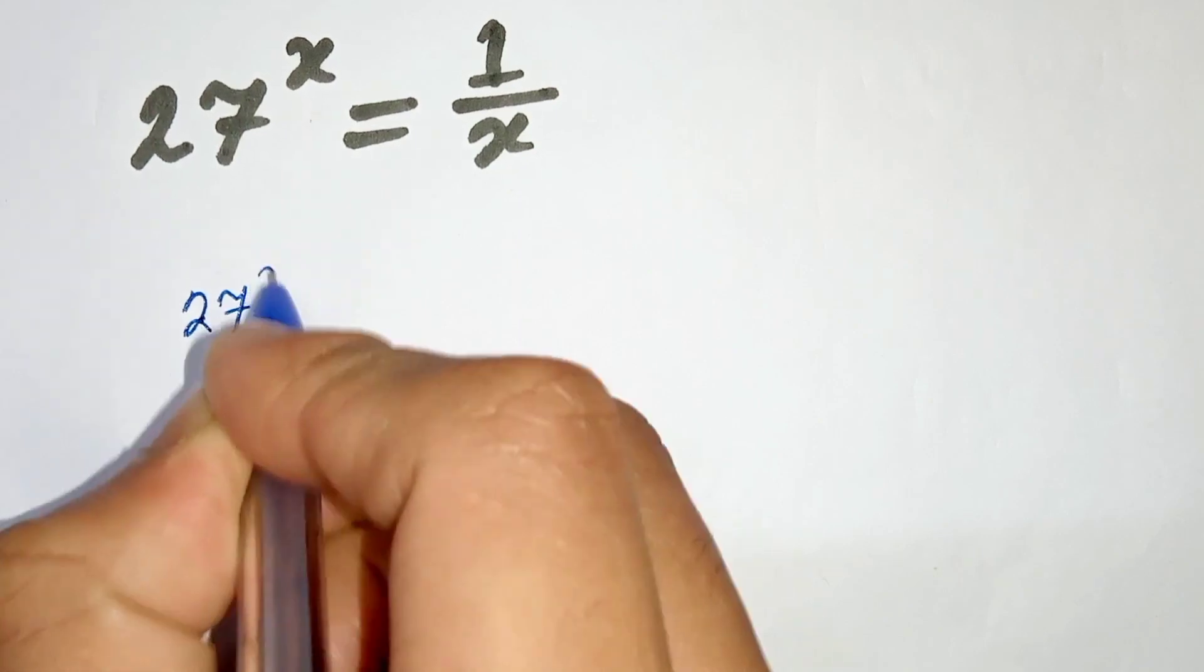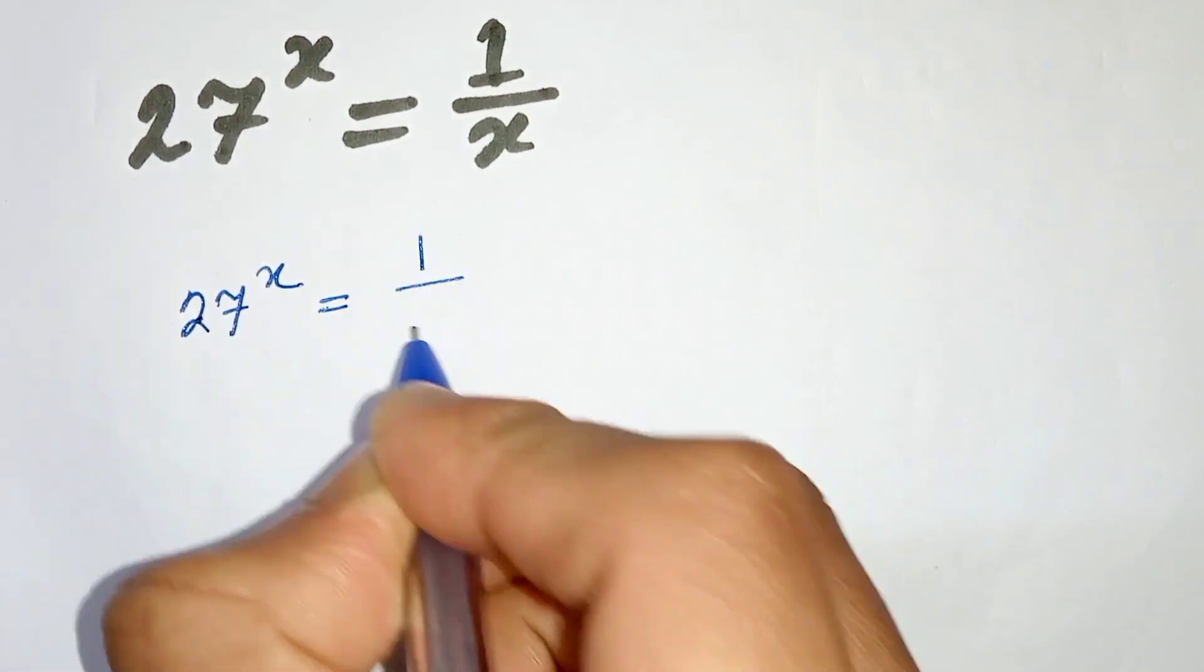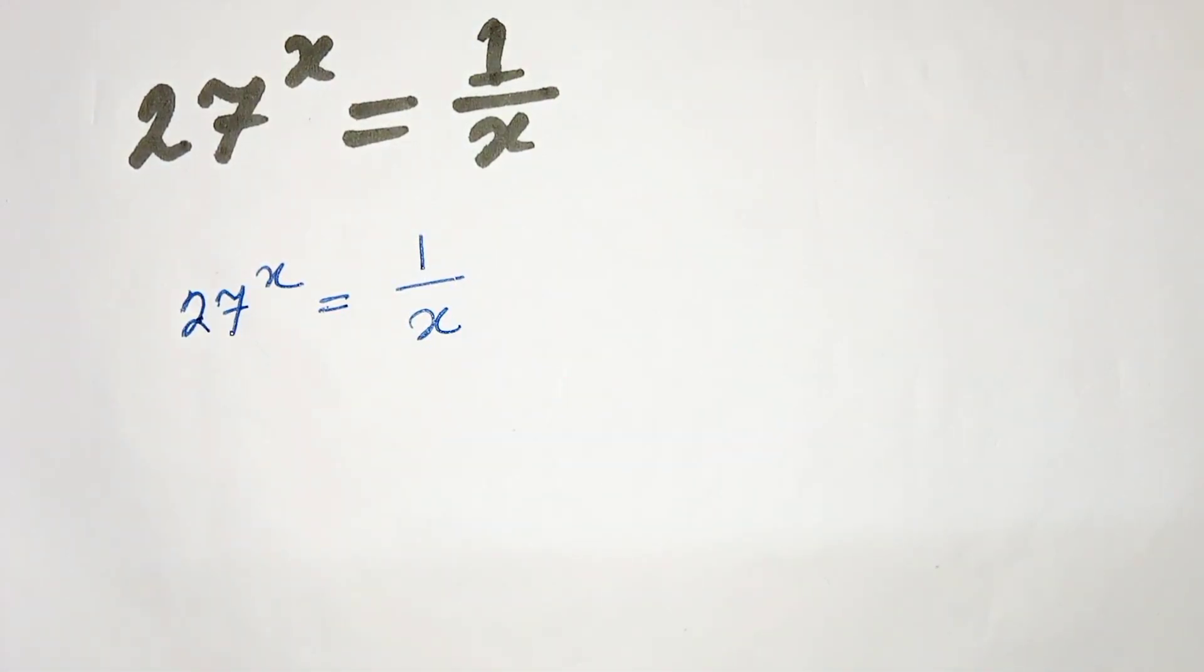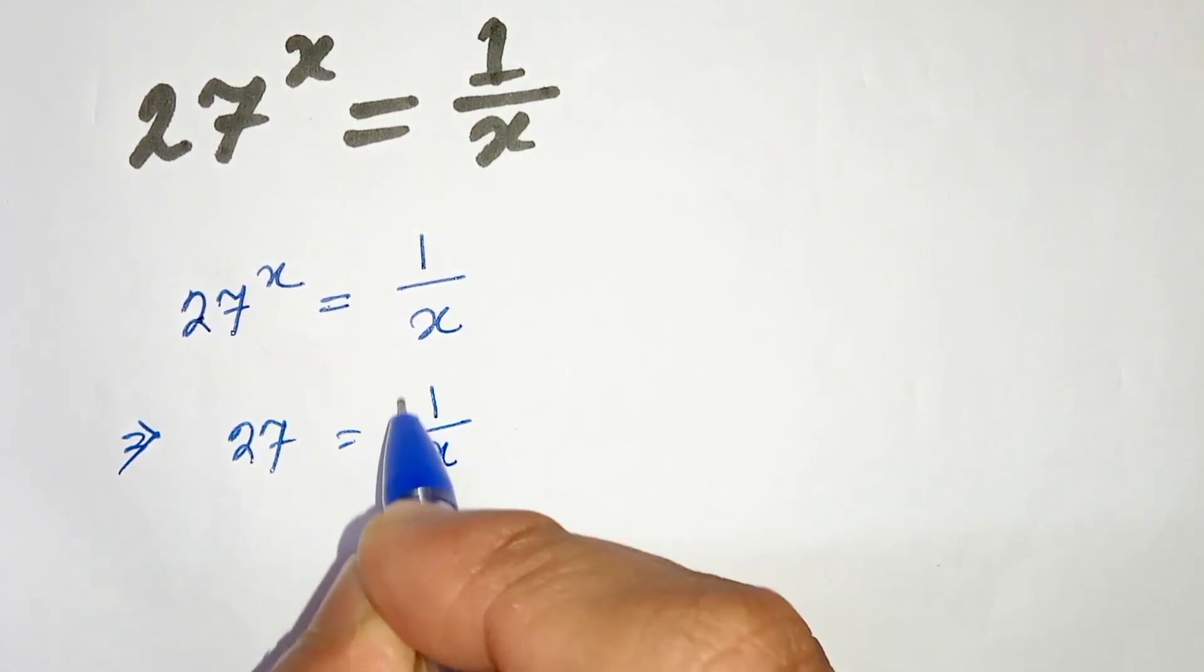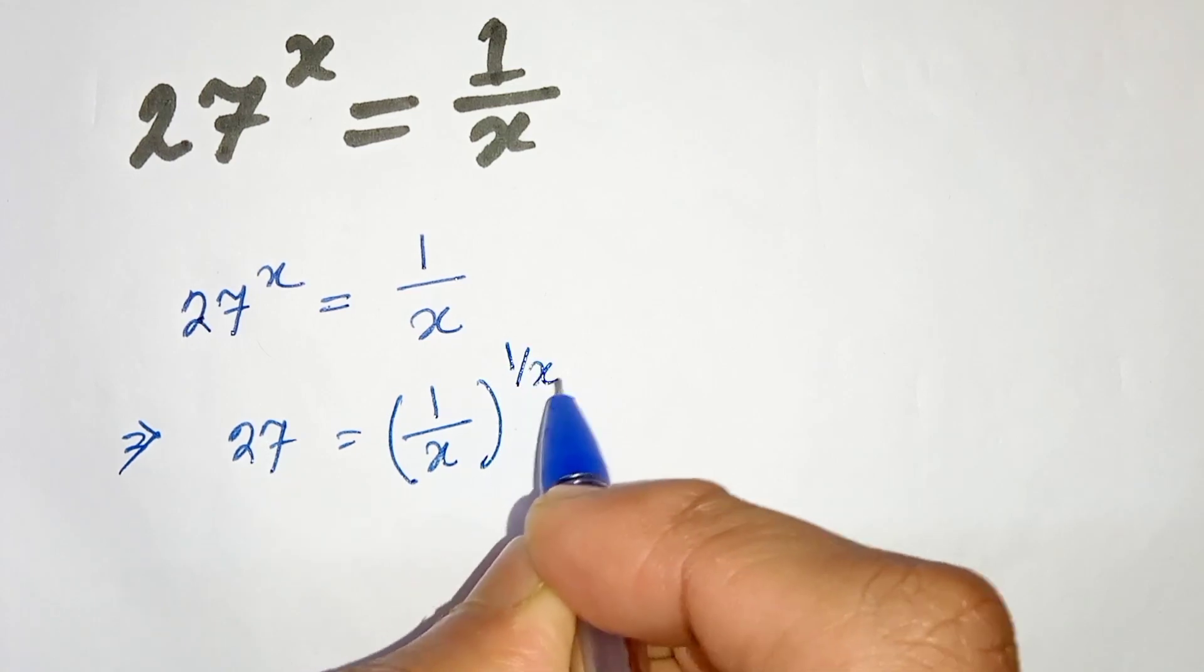27^x equals 1/x, so 27 can be written as (1/x)^(1/x).